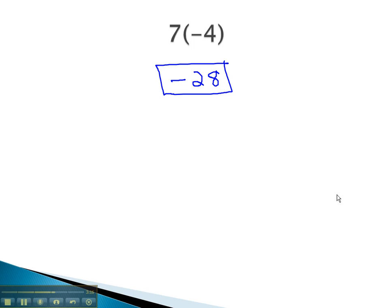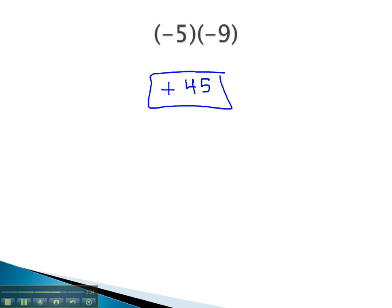Let's consider another example: negative 5 times negative 9. Here we see they are both the same sign. With multiplication, when we have the same sign, the answer is positive. 5 times 9 is 45, and we get positive 45 for our solution.